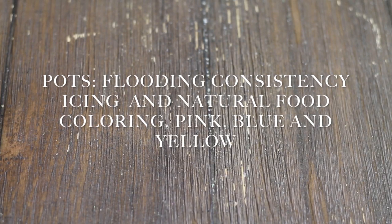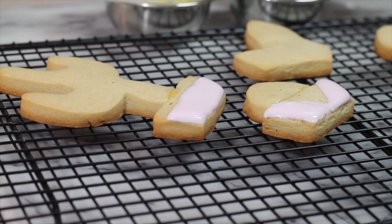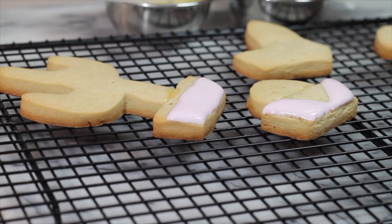For the pots you are going to need pink, blue, and yellow. You will start by decorating the bottom of your cookies.